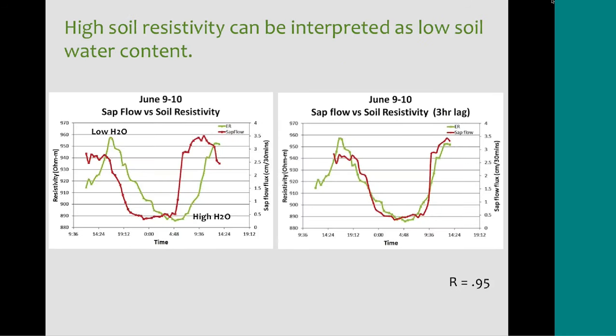Here I'm focusing on a specific day — the one with our highest correlation of 0.95 — and you can see it matches up a lot better than some other datasets. When we have the highest sap flow, we have the highest resistivity, meaning the lowest amount of water. During the nighttime, around midnight, there's lower resistivity, indicating higher amounts of water in the soil and lower transpiration because the tree is essentially resting.